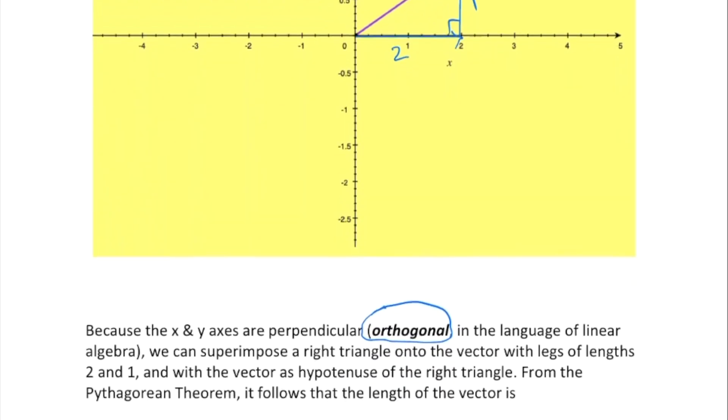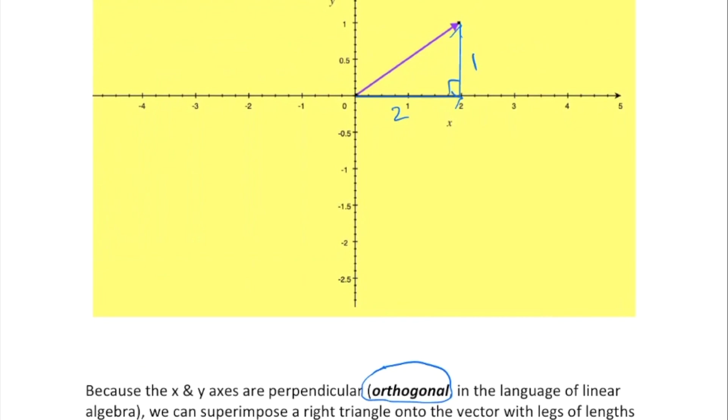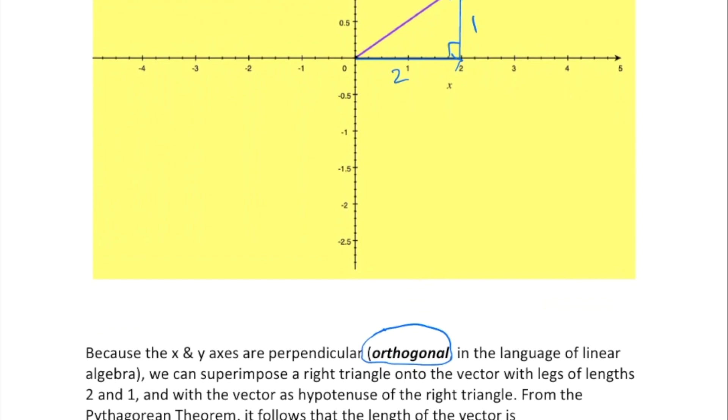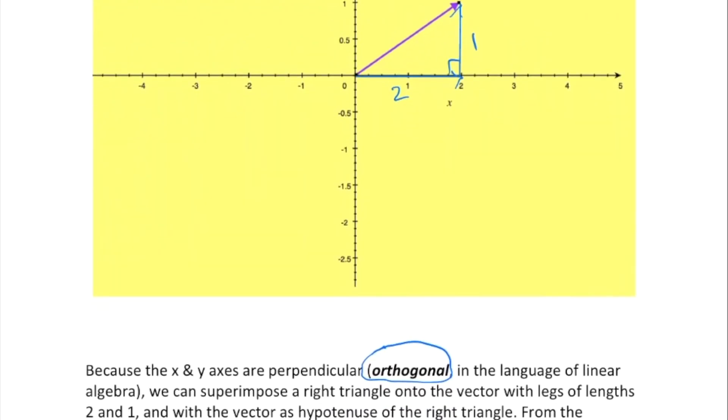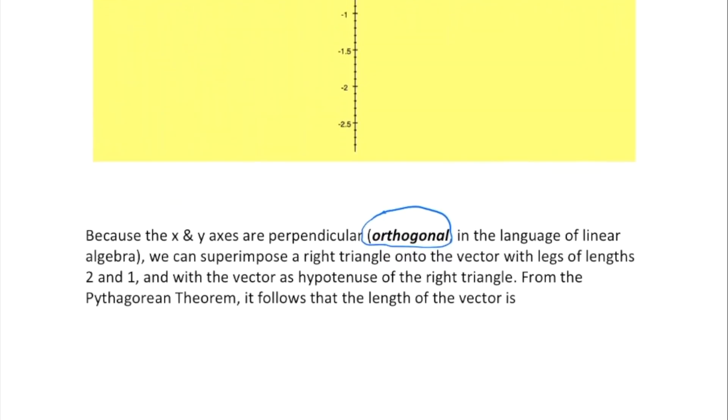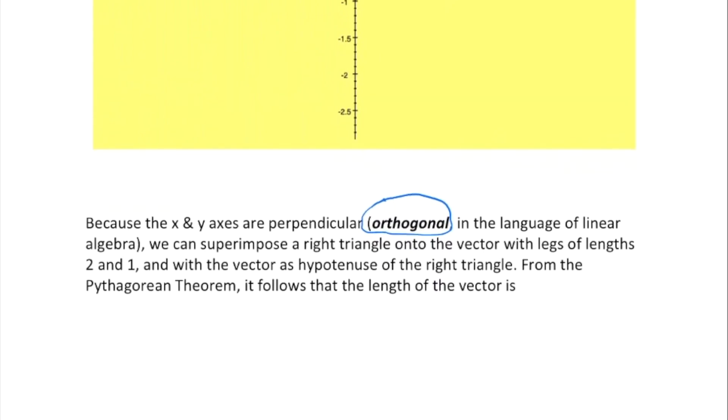In that right triangle, the vector itself is the hypotenuse opposite the right angle. The two sides are two units and one unit respectively. To find the length of the vector, we use the Pythagorean theorem: the square root of two squared plus one squared, which is the square root of five.